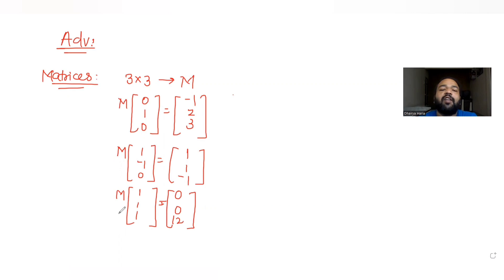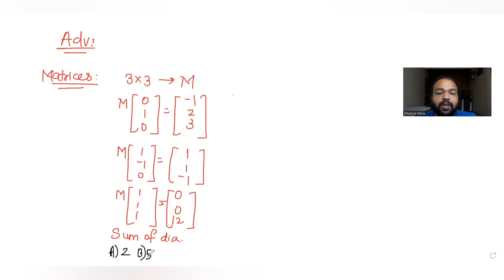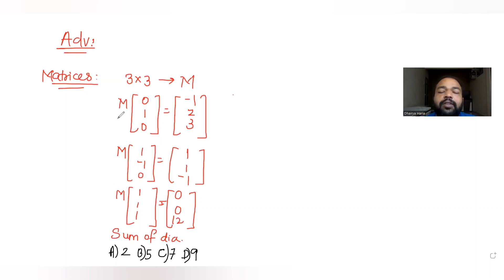The third condition tells us that the same matrix M multiplied with [1, 1, 1] gives us [0, 0, 0]. These are the three conditions given to us, and then we are asked to find the sum of the diagonal elements of matrix M. The four options are: 2, 5, 7, and 9.